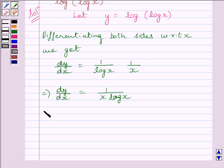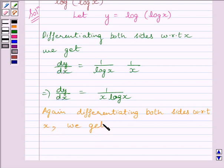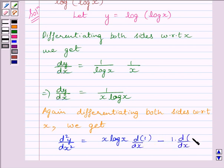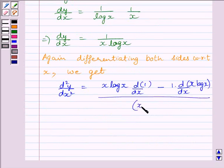Now again differentiating both sides with respect to x, we get d²y/dx² is equal to x log x multiplied by derivative of 1 minus 1 multiplied by derivative of x log x, upon square of x log x.